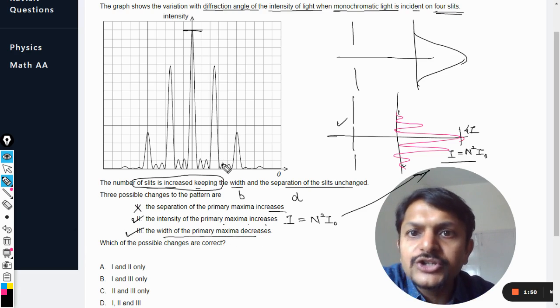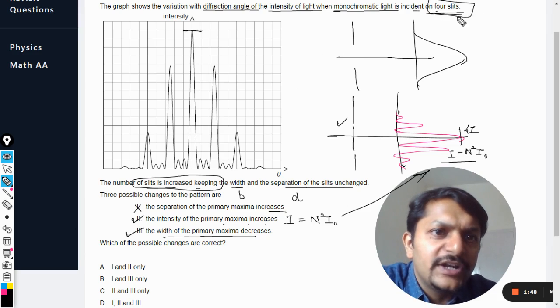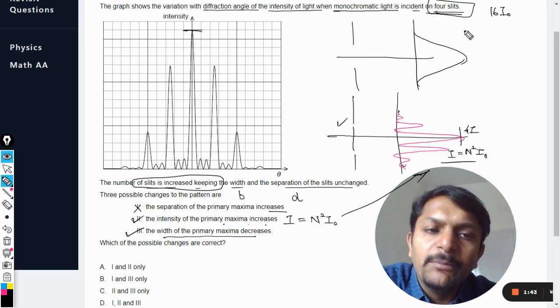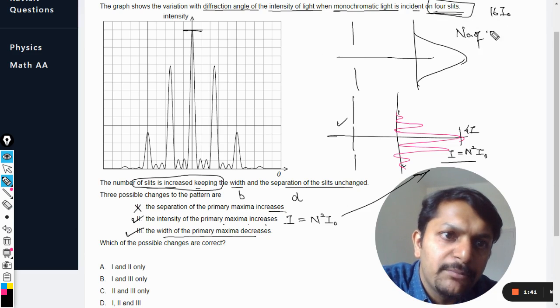Why the width will decrease? Because in this case when there are four slits, so the intensity will be four squared, that is 16I₀. And what are the number of secondary maxima?